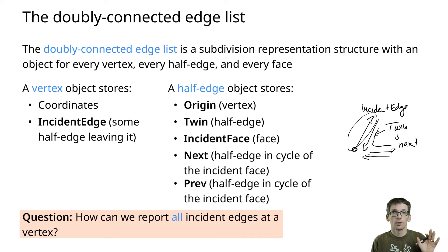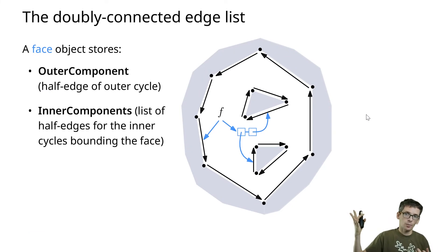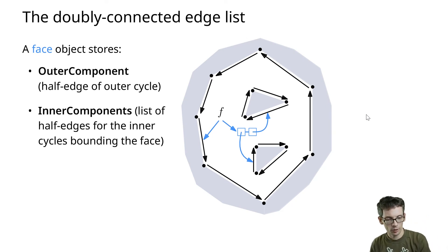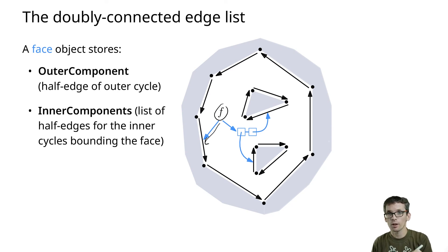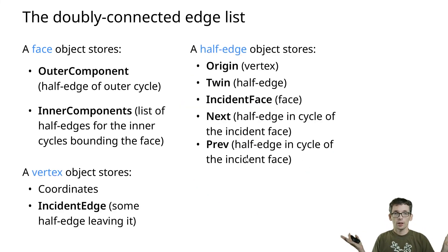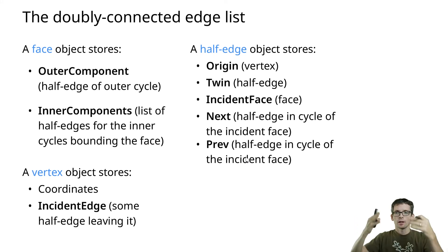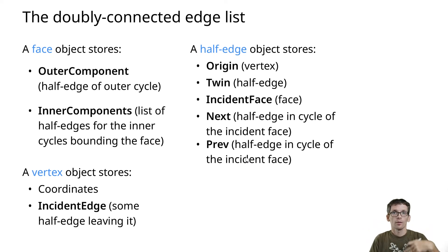For faces, we need access to their outer boundary and possibly inner boundaries. We store one half edge for the outer boundary and one half edge for each inner boundary. From that one half edge, we can find all others by going through next or previous. As a summary: vertices store one incident half edge; faces store one half edge of the outer boundary and one half edge for each inner boundary; half edges store origin, twin, incident face, next, and previous.